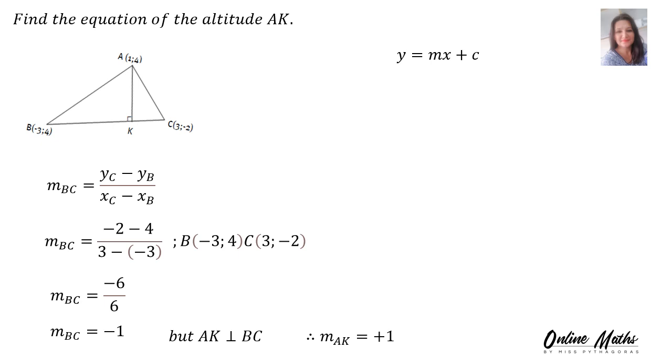Then, for the equation of the altitude, we use y is mx plus c. In m's place, we substitute 1. Now, to find a value for c, we're going to use A's coordinate. That's the only coordinate that lives on AK that we've got. And it consists of an x and a y. So in y's place, we substitute 4. In x's place, we substitute 1. Therefore, c will be 4 minus 1. C is 3. And the equation of the altitude, y is x plus 3.